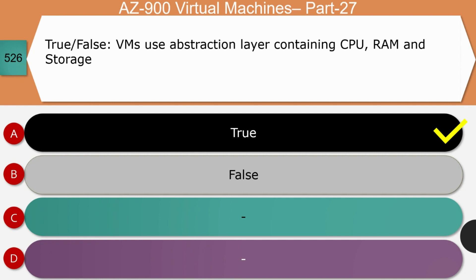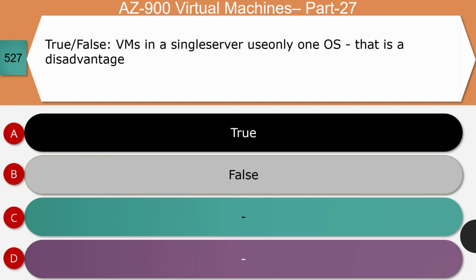Question 7: True or false — VMs in a single server use only one OS, which is a disadvantage. The answer is true. The host OS will always be a single OS over which the VMs reside. If you need to change the host OS, that requires considerable time for reconfiguration and backing up existing VM images. It is a time-consuming exercise requiring considerable effort, and so it is treated as a disadvantage.